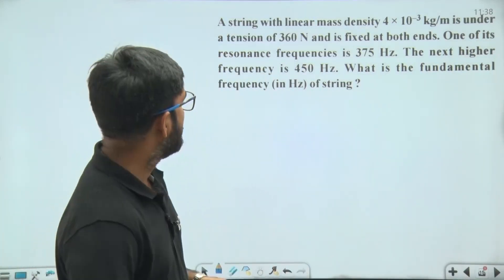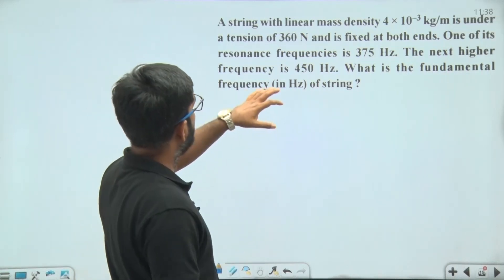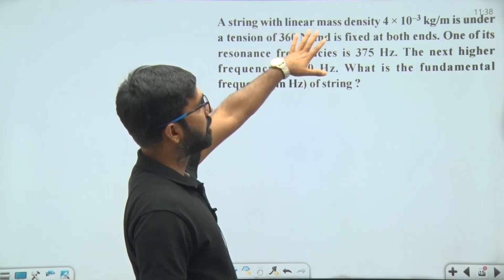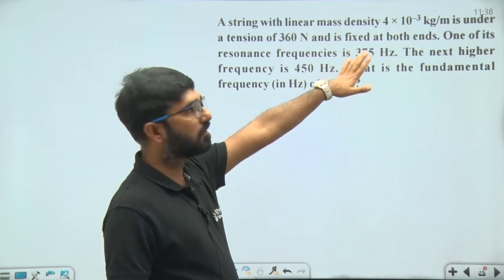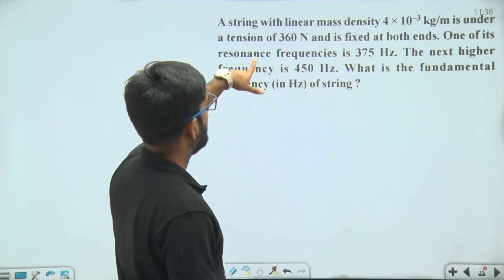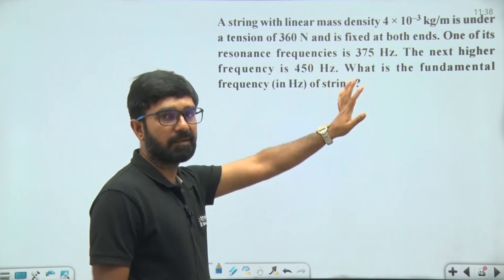In this question, there is a string with linear mass density 4 × 10^-3 kg/m under a tension of 360 N and fixed at both ends.